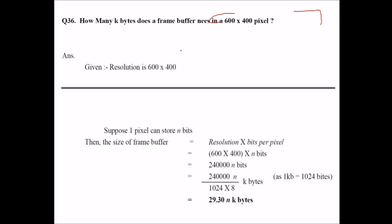For that what we do, the resolution is given as 600 x 400, it can be anything. So how we proceed? Let us suppose that 1 pixel can store n bits. So the size of this frame buffer will be the resolution, which is given like this, into bits per pixel.